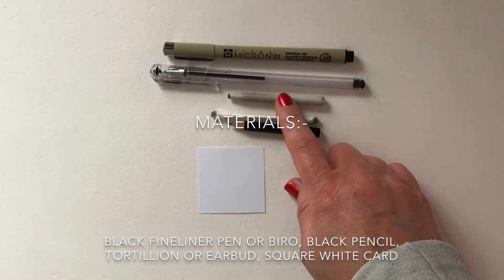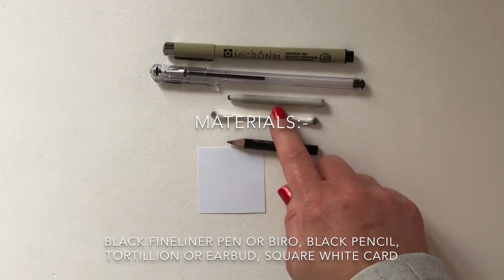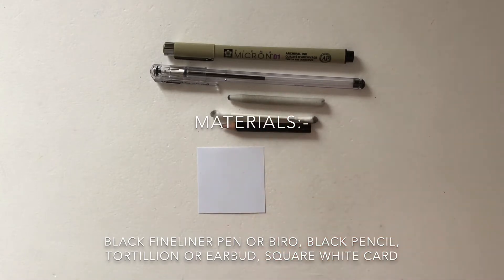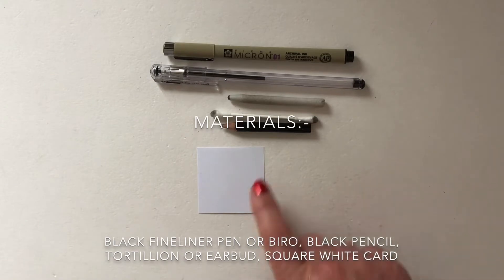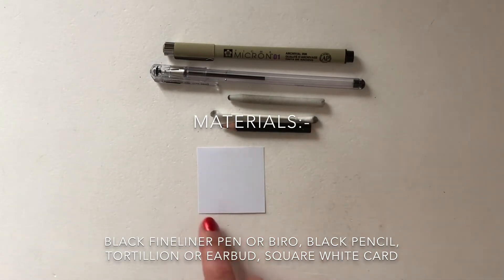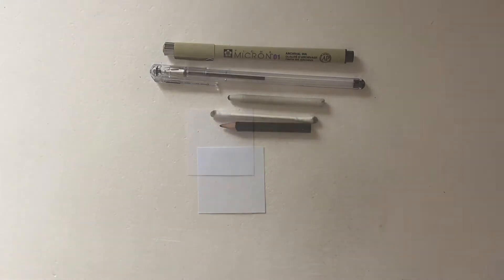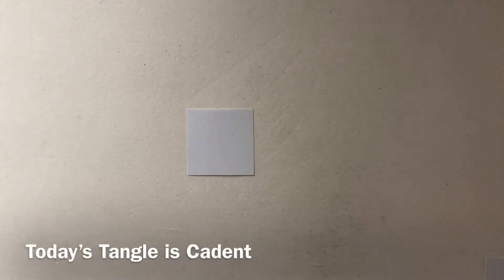You'll also need a black tortillon or blending stump and if you haven't got one, an earbud, and a black pencil along with a white piece of card which is five centimeters squared or two inches squared. If you would like to pause the video, go and get your materials.